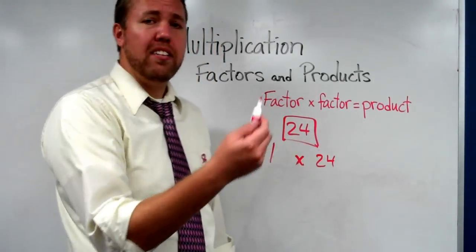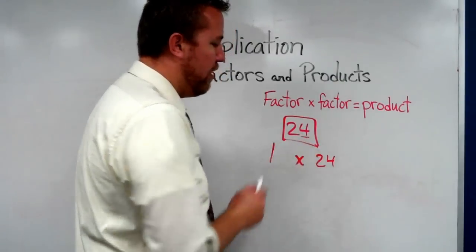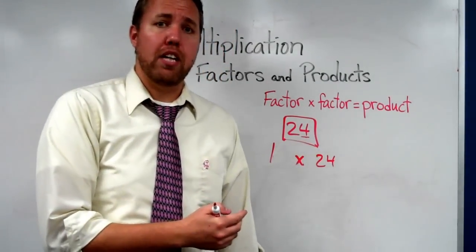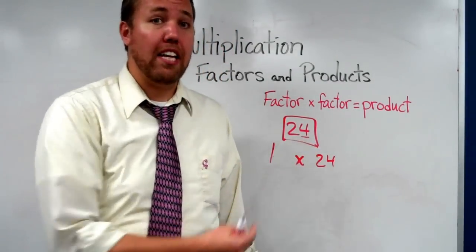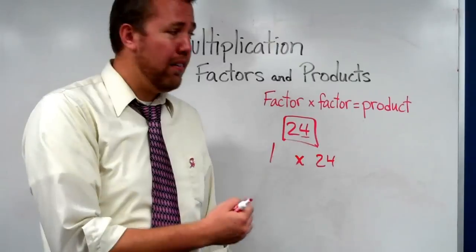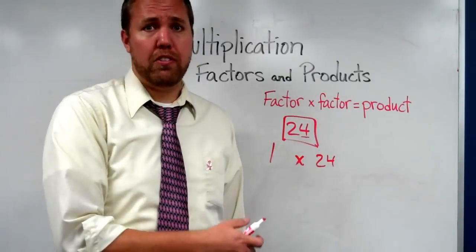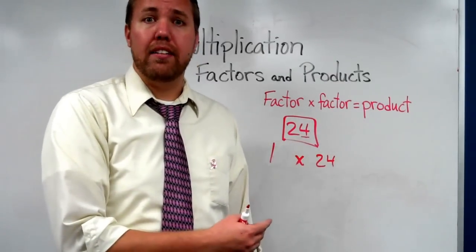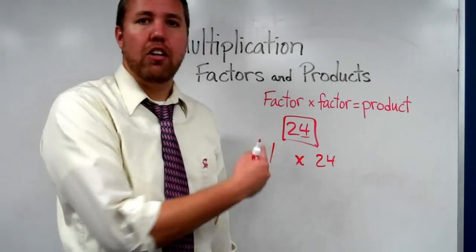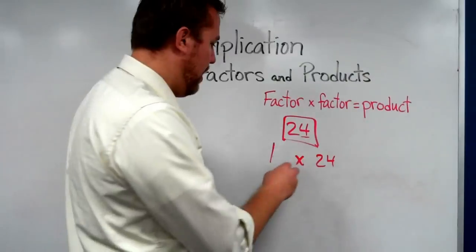We look next. Does 2 go into 24? Well, let's see, an even number. Every even number ends in a 2, 4, 6, 8, or 0. If a number ends in 2, 4, 6, 8, or 0, then it is an even number, which means 2 is a factor of that number.